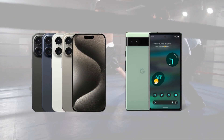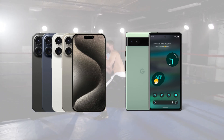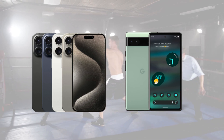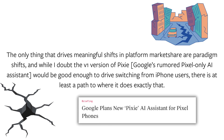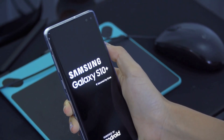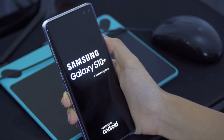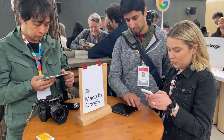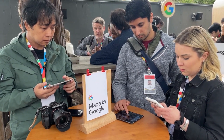Yes, Android has its advantages to iOS, but they aren't particularly meaningful to most people. And even for those that care, like me, they are not large enough to give up on iOS's overall superior user experience. The only thing that drives meaningful shifts in platform market share are paradigm shifts. And while I doubt the V1 version of Pixie — Google's rumored Pixel-only AI assistant — would be good enough to drive switching from iPhone users, there is at least a path to where it does exactly that. Of course, Pixel would need to win in the Android space first, and that would mean massively more investment by Google in go-to-market activities, from opening stores to subsidizing carriers to ramping up production capacity.